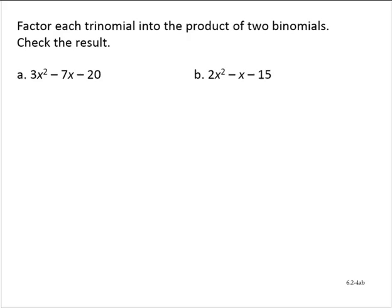Factor each trinomial into the product of two binomials and check the result. In these examples, we have a trinomial where the lead coefficient is not 1. For example, we have a lead coefficient of 3 in the first example and a lead coefficient of 2 in the second. When that happens, we're going to factor using another method, which is often called the AC method or the AC and grouping method.